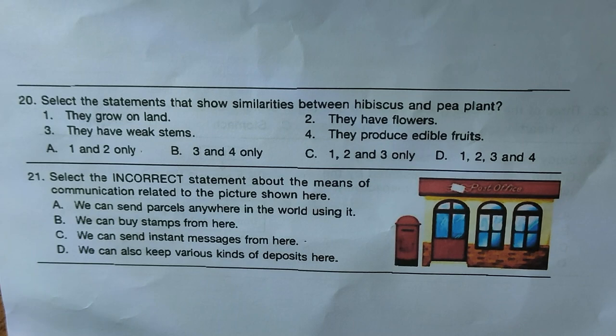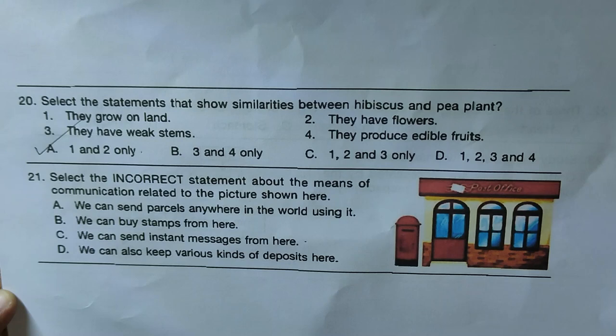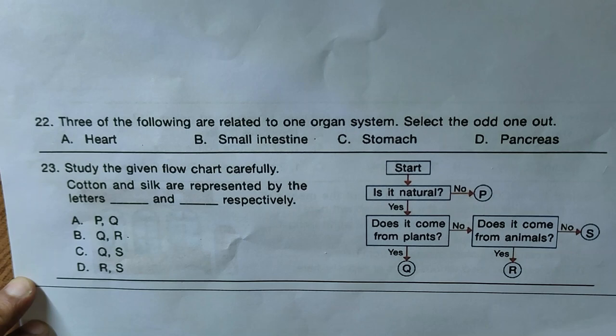Question twenty-one: select the incorrect statement about the means of communication related to the picture of a post office. Option A — we can send parcels anywhere in the world; B — we can buy stamps; C — we can send instant messages; D — we can keep various deposits. Option C is incorrect — you cannot send instant messages from a post office. So C is the correct answer.